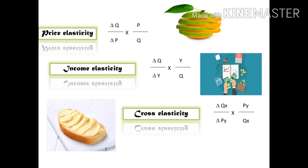For example, if the price of apple increases, the quantity demanded of oranges will increase. This is an example of cross price elasticity — when the price of one commodity rises, demand shifts to the substitute commodity.